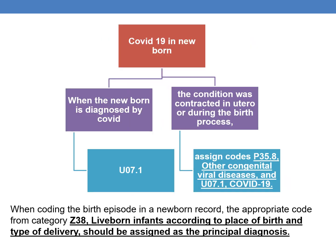Coming to COVID-19 in a newborn — there are two scenarios. Whenever the newborn is diagnosed with COVID-19, you can simply assign U07.1 directly. But in the second scenario, if the physician documents that the condition was contracted in utero or during the birth process, then we must assign code P35.8 — other congenital viral disease — followed by U07.1. Whenever we code the birth episode in a newborn record, the appropriate code from category Z38, live born infants according to place of birth and type of delivery, should be assigned as the principal diagnosis.